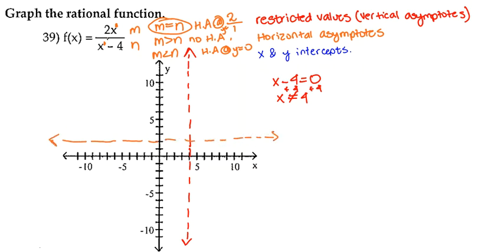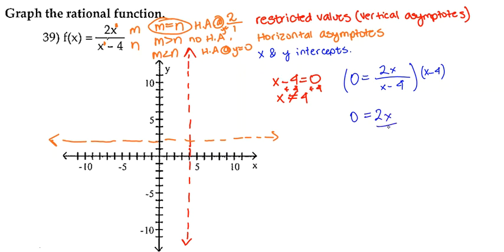Next, we're going to find our x and y intercepts. To find the x-intercept, we set f(x) equal to 0, giving us 0 equals 2x over x minus 4. Multiplying both sides by x minus 4 gives 0 equals 2x. Dividing by 2 gives x equals 0. So our x-intercept is at (0, 0).